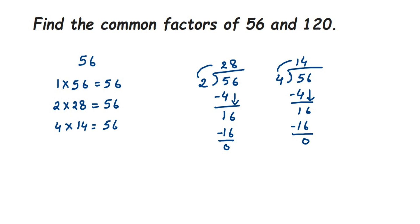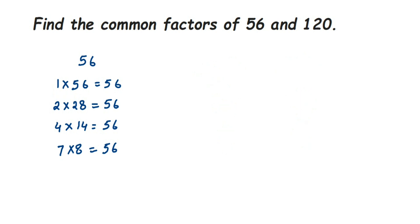It does go in the 7 times table: 7 × 8 = 56. We don't write 8 × 7 separately since it's the same pair. After 8, it doesn't go in the 9 or 10 times table, and 56 × 1 is already written. So the factors of 56 are: 1, 2, 4, 7, 8, 14, 28, and 56.